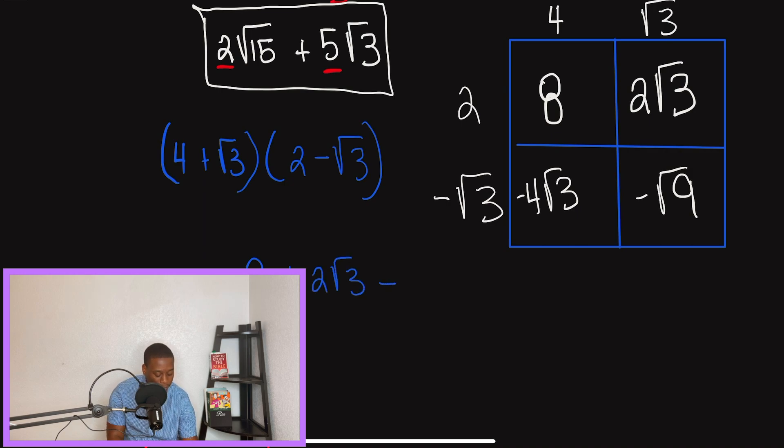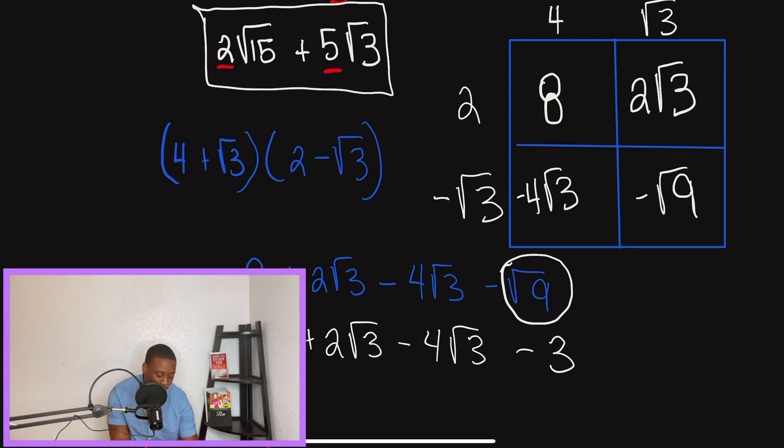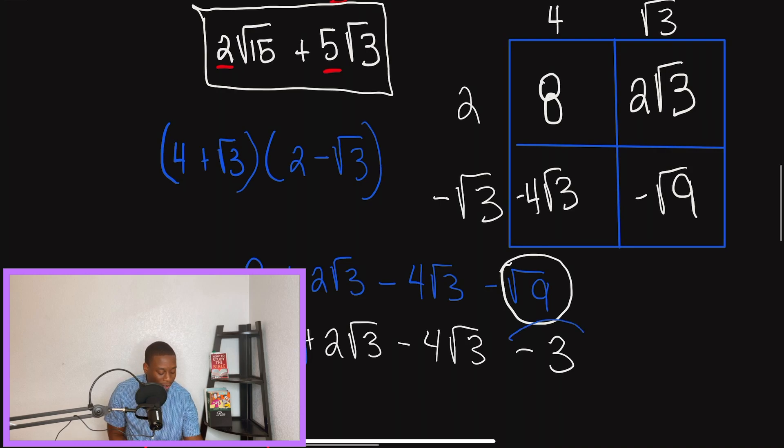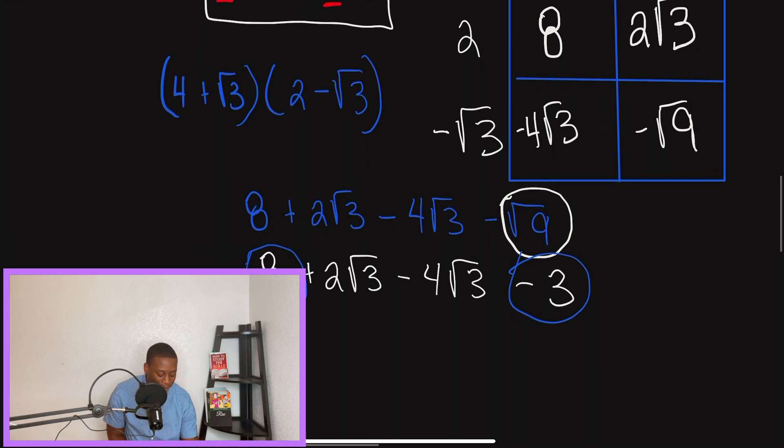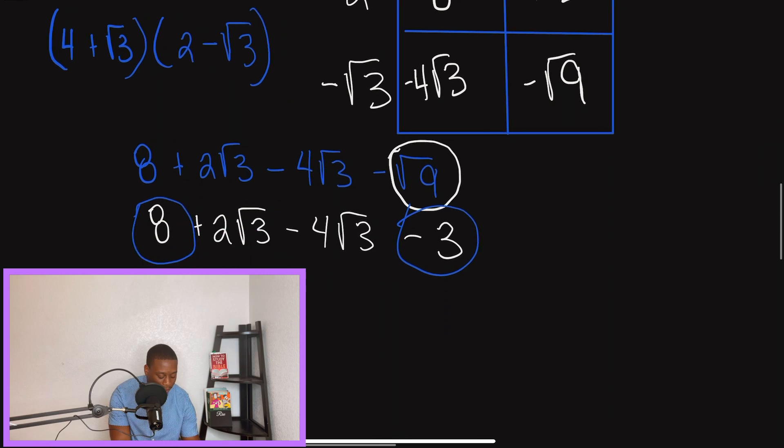So we have 8 plus 2 radical 3, minus 4 radical 3 minus radical 9. So the first thing we're going to want to do is check to see if we can simplify any of our radicals. And I've noticed that we can simplify radical 9. That's a perfect square. So once we rewrite this, we're going to have 8 plus 2 radical 3 minus 4 radical 3 minus 3. So now what I'm going to do is I'm just going to combine 8 and 3 because we could just subtract those real easy.